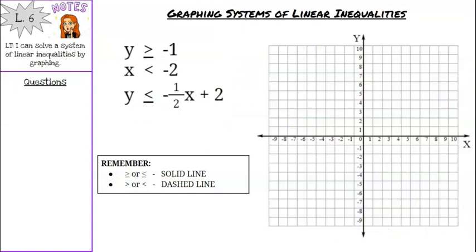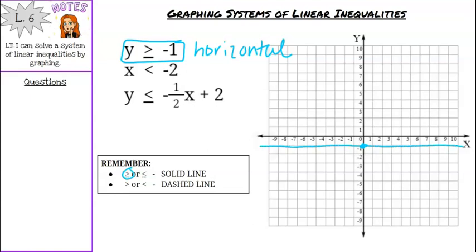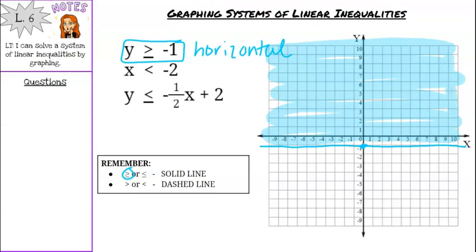One last set of systems — this time we have three inequalities to graph. Starting with blue: y is greater than or equal to negative 1. There is no x variable, so this is a horizontal line starting at y equals negative 1. It's greater than or equal to, so it's a solid line. Shade greater than — above the line. Shade lightly so you can still see the other numbers and areas of your graph.